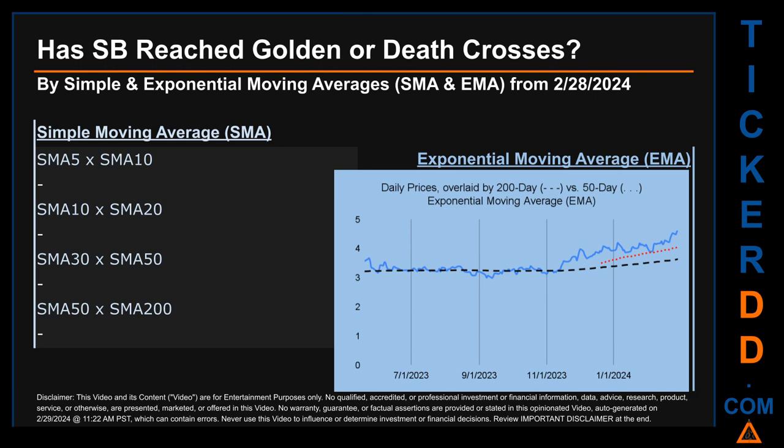Has SB's price reached golden or death crosses? Golden cross and death cross are basic signals that compare average prices across two specified trade-day ranges — a short-term versus a long-term range, for example 5-day versus 10-day trade days. A golden cross is a bullish signal; it appears when a ticker's short-term moving average crosses above its long-term average. Vice versa, a death cross is a bearish signal when the short-term crosses below its long-term moving average. For our analysis we looked at both simple moving average (SMA) and exponential moving average (EMA).